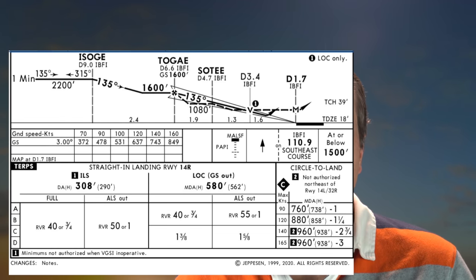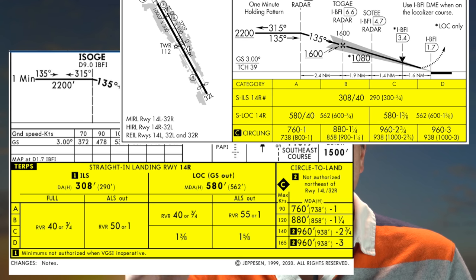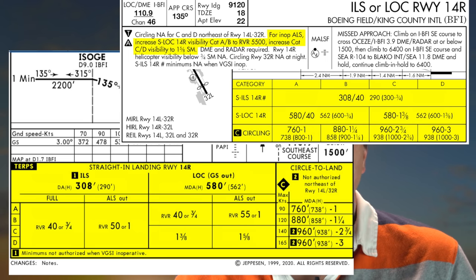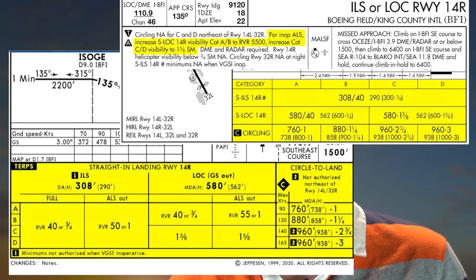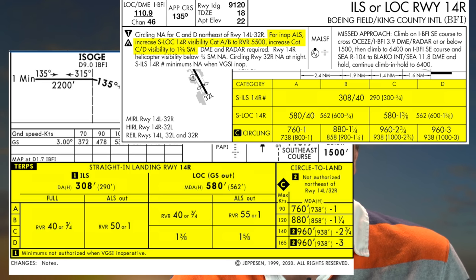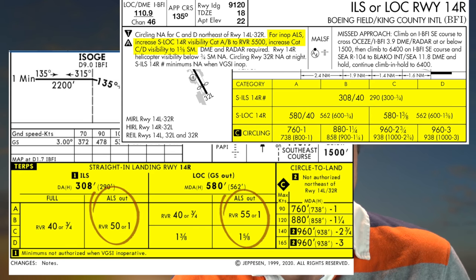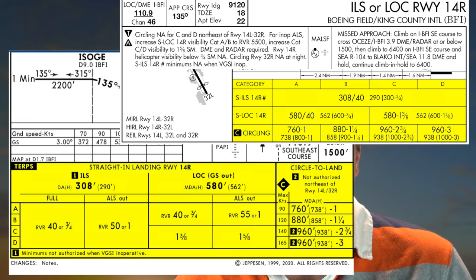Below the profile view is the minimums table. While they both have the same information — because minimums are minimums — they are arranged differently, like swapping the rows and columns of a table. More importantly, when we deal with broken approach lines or we don't have the local weather, we find instructions at the top of the government charts on how to increase the minimums. Jeppesen just prints the increased minimums on the chart, so we don't need to do any math. You will also notice that Jeppesen does not have the military minimums in this table, nor do they show military radio frequencies at the top, which keeps things simple.